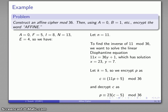So let's go ahead and take a look at this. So our letters are A0, F5, I8, N13, E4. So I'm going to encrypt 0, 11 times 0 plus 5, that's going to be 5.